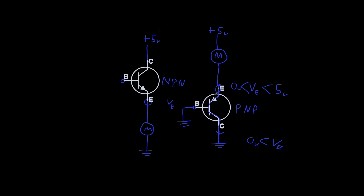On an NPN type, it turns on when the base is greater than the emitter. Say we want the system off: we connect the base to ground, or 0 volts. In that case, 0 volts is less than or equal to the emitter voltage since the emitter is also connected to ground, so the transistor is off - no voltage is applied to the motor and the motor is off.